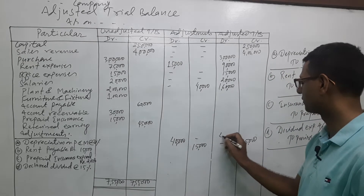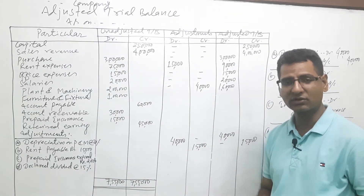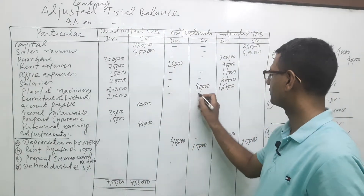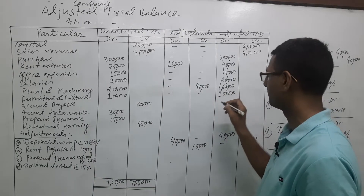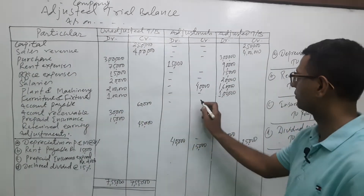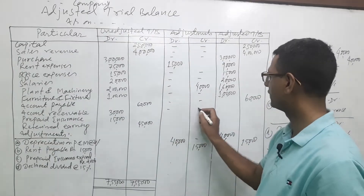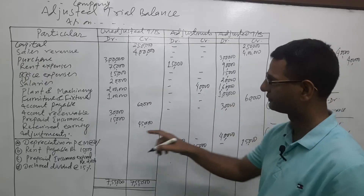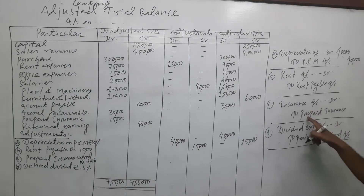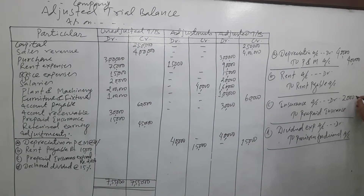Debit above means credit below; debit below means credit above — very simple rule. For furniture and fixtures, similarly charge depreciation the same way as plant and machinery. For accounts payable, no adjustment — write it in credit as it is. For account receivable, no adjustment — 30,000 is on debit side. For prepaid insurance expired, the entry is: insurance account debit to prepaid insurance — that is 2,000 debit and 2,000 credit.